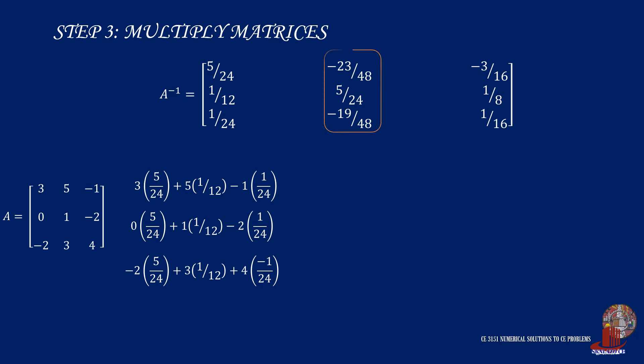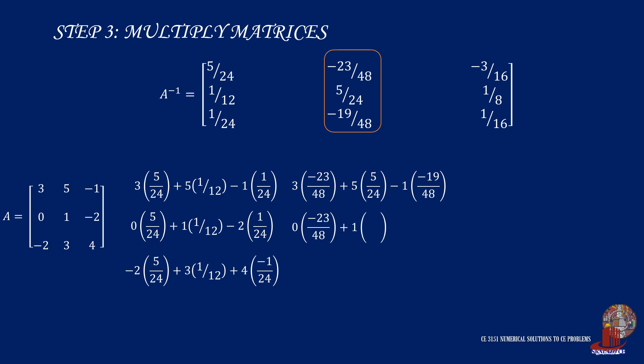Moving on to the second column, the first row has 3 times negative 23/48, plus 5 times 5/24, minus 1 times negative 19/48, simplified as 0. The second row has 0 times negative 23/48, plus 1 times 5/24, minus 2 times negative 19/48, and this results to 1. The third row of the second column has negative 2 times negative 23/48, plus 3 times 5/24, plus 4 times negative 19/48, again simplified as 0.